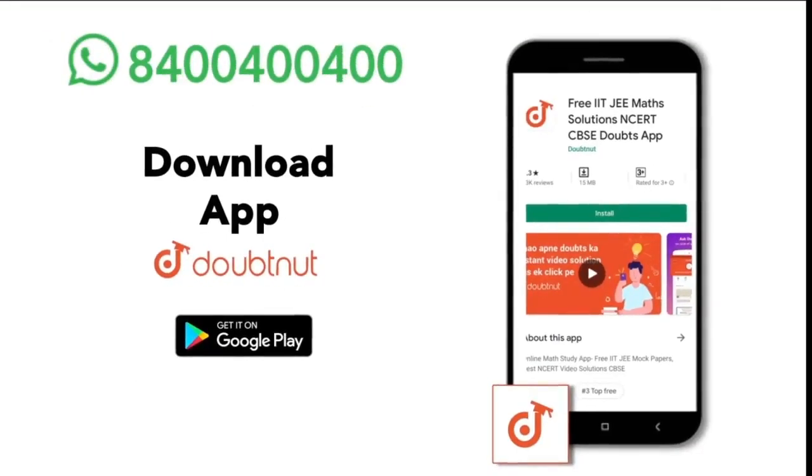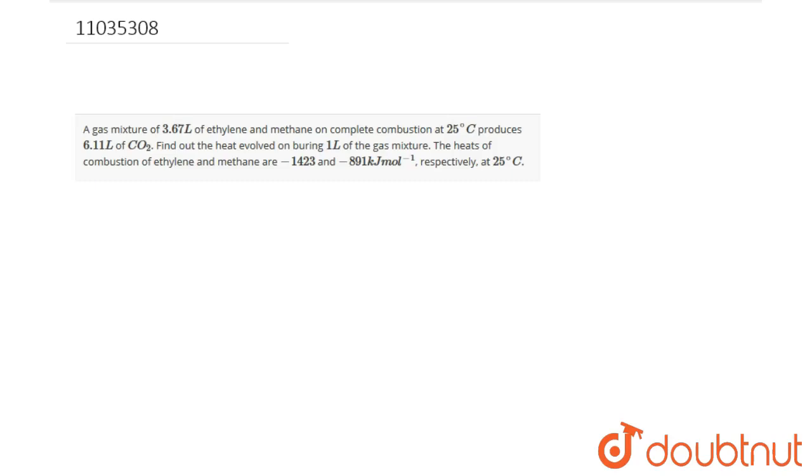This question asks us to find the heat evolved on burning 1 liter of a gas mixture of ethylene and methane. A gas mixture of 3.67 liters of ethylene and methane on complete combustion at 298 Kelvin produces 6.11 liters of CO2. The heat of combustion of ethylene and methane is given as 1,423 and 891 kJ respectively at 298 Kelvin.